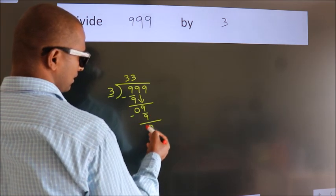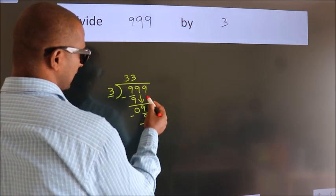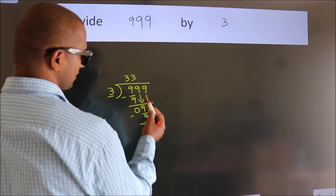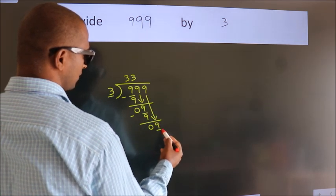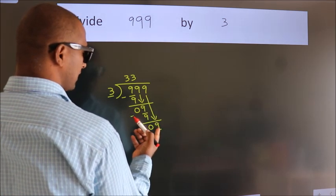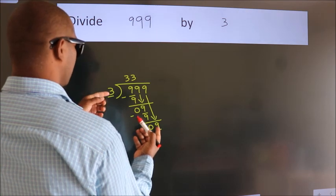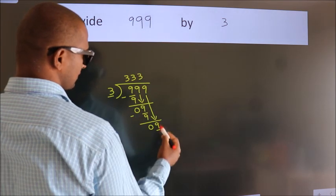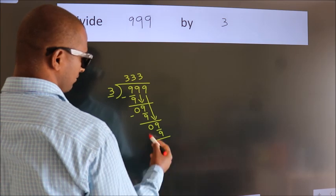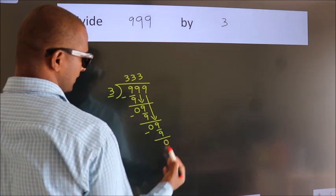We get 0. After this, bring down the beside number. So, 9 down. When do we get 9 in the 3 table? 3 threes, 9. Now we subtract. We get 0.